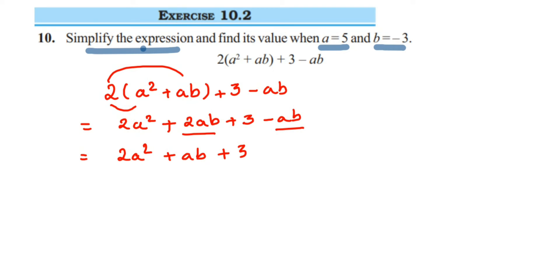We are going to substitute the values here. We are going to put a is equal to 5 and b is equal to minus 3. This will become 2 into—not minus, I am sorry—it is 5 square. So, 2 into 5 square plus we have ab. A value is 5 and b value is minus 3. So, 5 into minus 3 plus 3.